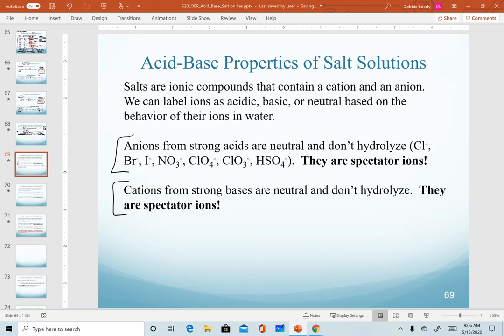By the same token, cations that come from strong bases are also neutral. Remember that these cations from strong bases, we don't call conjugates because they come from Arrhenius bases. So these are literally just going to be cations. They're all going to be metals. And they are called spectator ions because they are neutral and won't react in water. They won't hydrolyze.